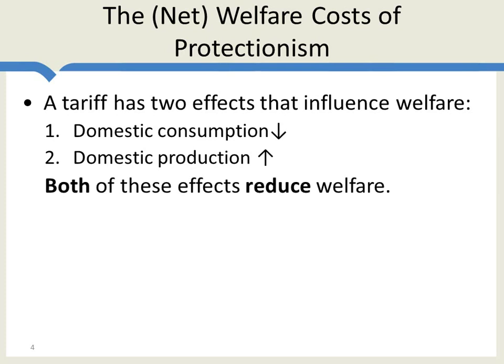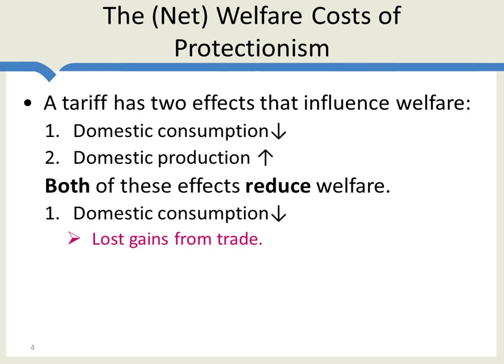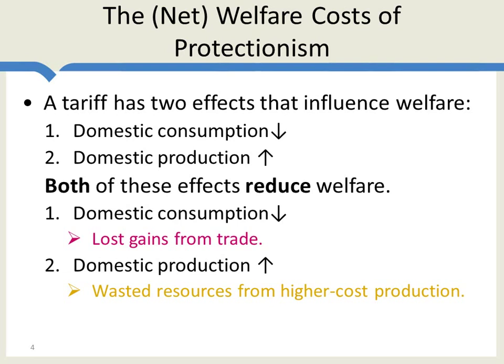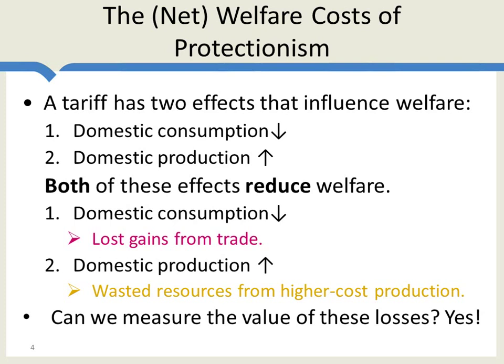Both of these effects, somewhat surprisingly, reduce welfare. Domestic consumption falls, creating lost gains from trade. And domestic production increases — you might think that's a good thing — except that domestic producers have higher costs than world producers. So on a net level, more resources go to production than are necessary, creating wasted resources. Can we measure the value of these losses? In fact, we can.